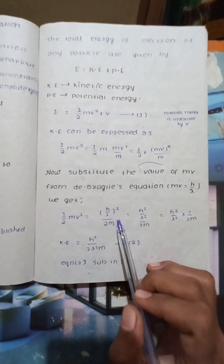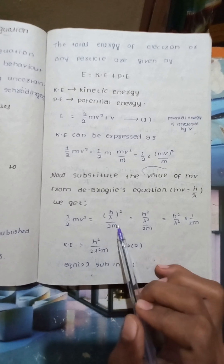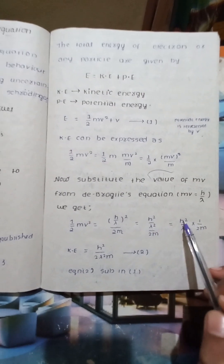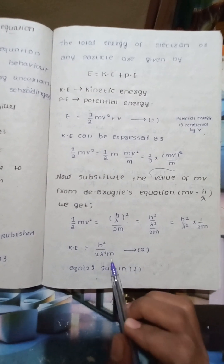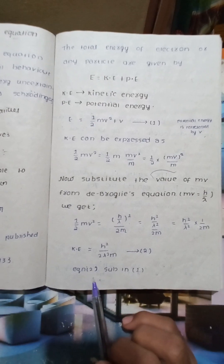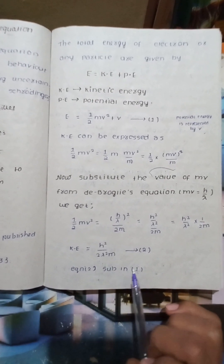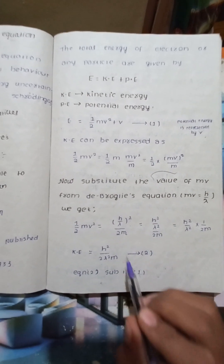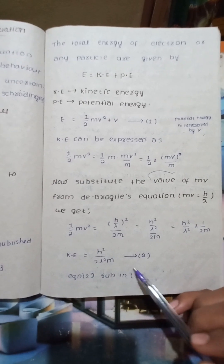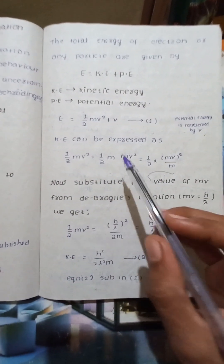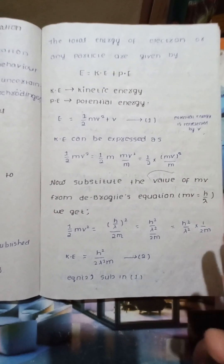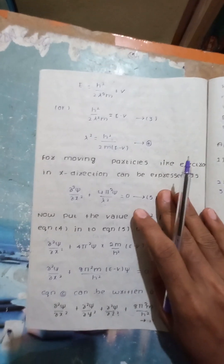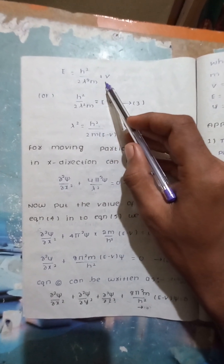We substitute mv = h/λ into the energy equation. Replacing mv with h/λ, the total energy becomes E = h²/(2mλ²) + V.